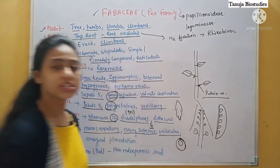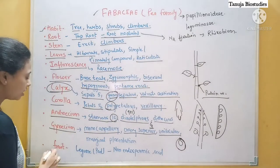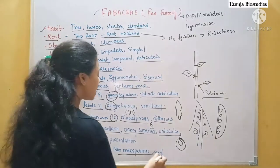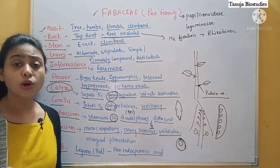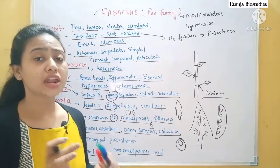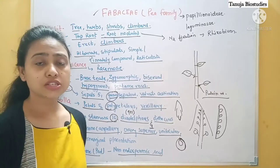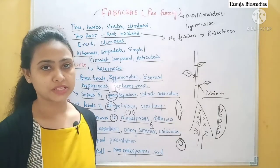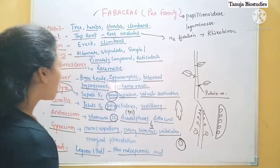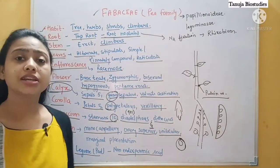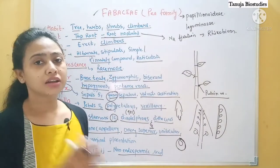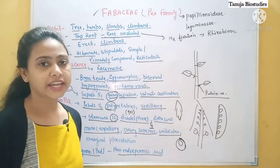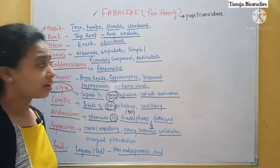The fruit is a legume. The seeds are non-endospermic, meaning no endosperm is present — the nutritive tissue is stored in the cotyledons. Now based on this information, let's write down the floral formula as well as draw the diagram.